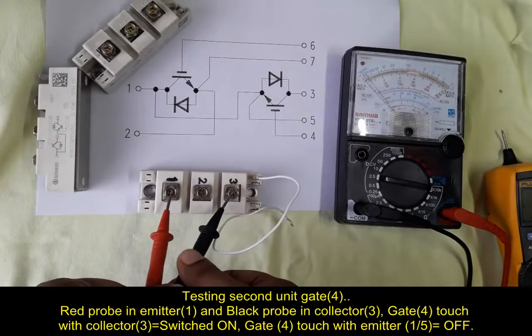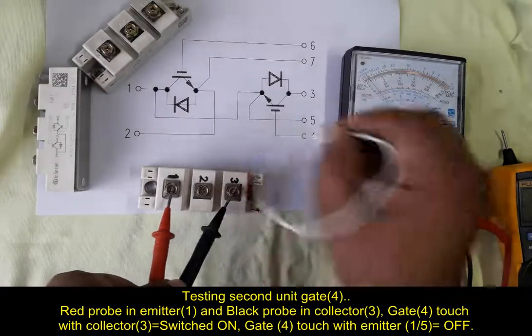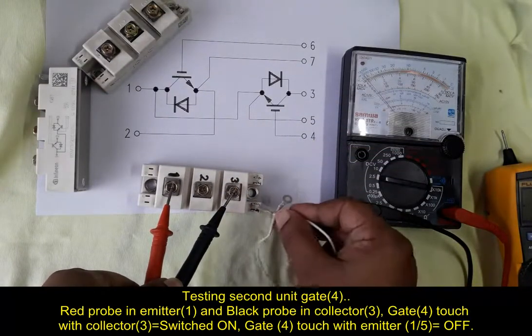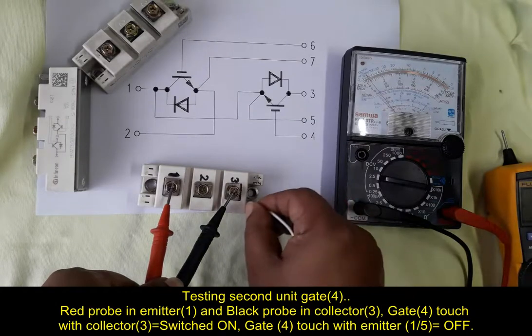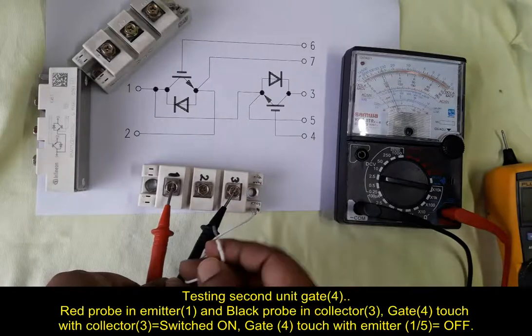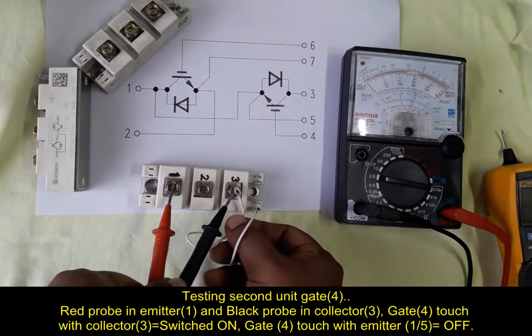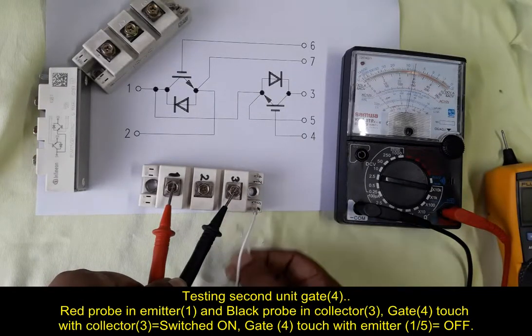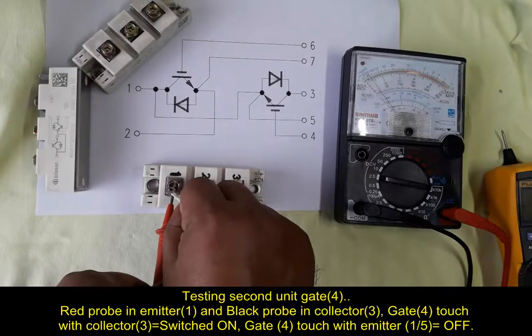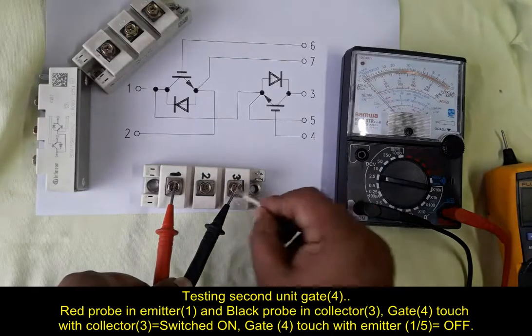Now testing second unit. Red probe in emitter 1 and black probe in collector, that's terminal 3. Now touch with terminal 4, gate terminal 4 to collector, that's terminal 3. The meter displays switch on and touch with terminal 1, it's off.